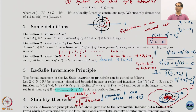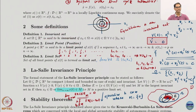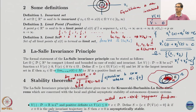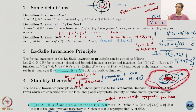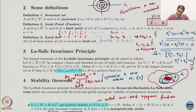So in order to talk about the LaSalle invariance, we defined a few things: the invariant set, limit points, and limit sets. I hope all of you are clear on these definitions. And then we went on to state the LaSalle invariance principle. The LaSalle invariance principle basically constructs a bunch of sets. You start with the domain — this is the B_R type of set where all the derivatives are negative and all the nice things happen.